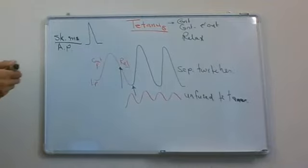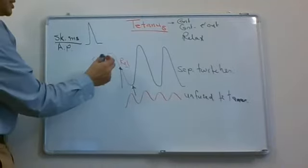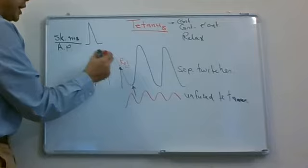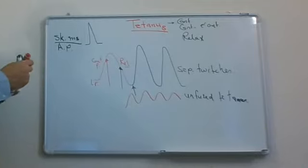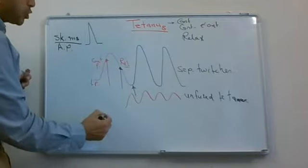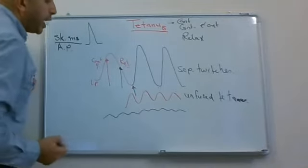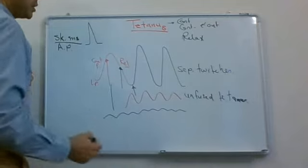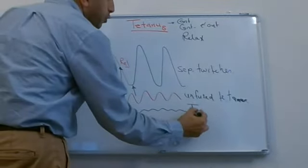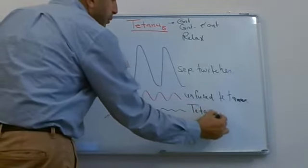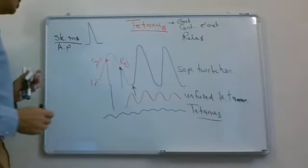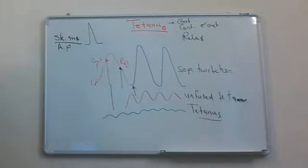If the skeletal muscle is stimulated during the contraction, it has no refractory period, and in this situation the skeletal muscle produces continuous contraction without relaxation. We name this situation as fused tetanus, or simply tetanus — continuous contraction without relaxation.